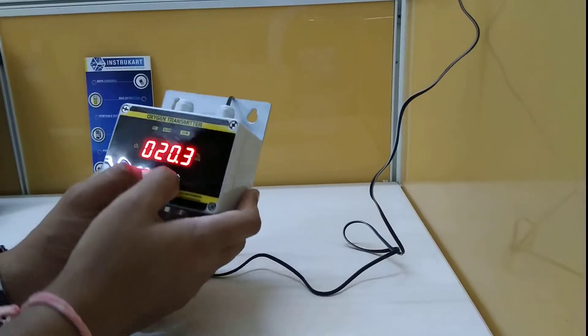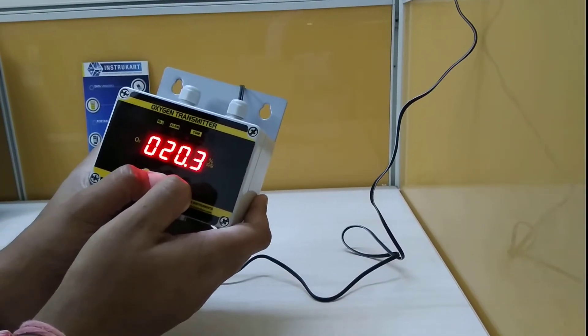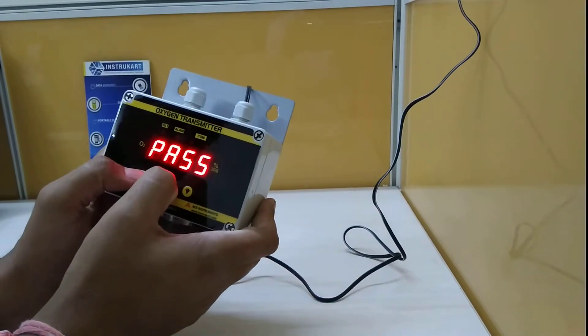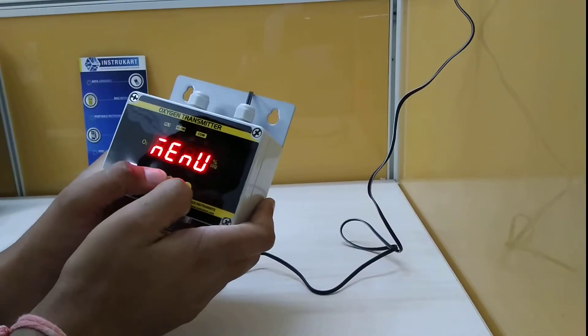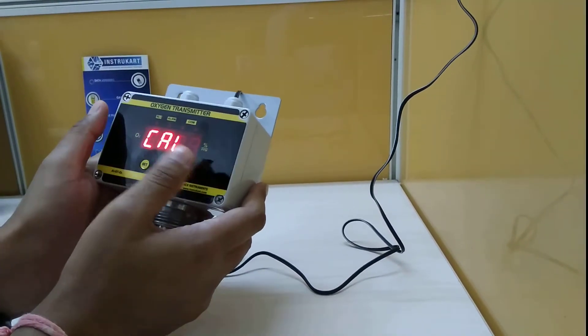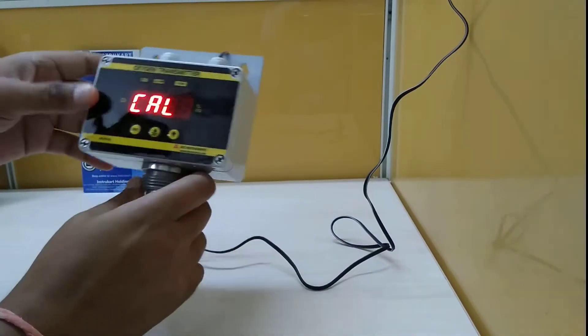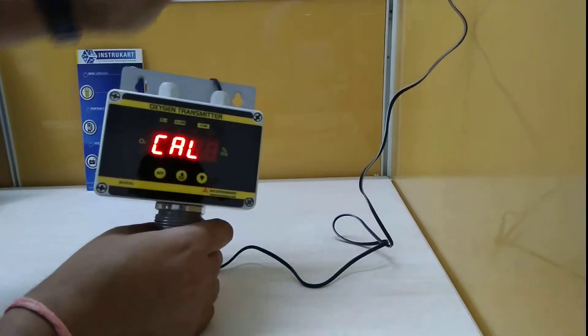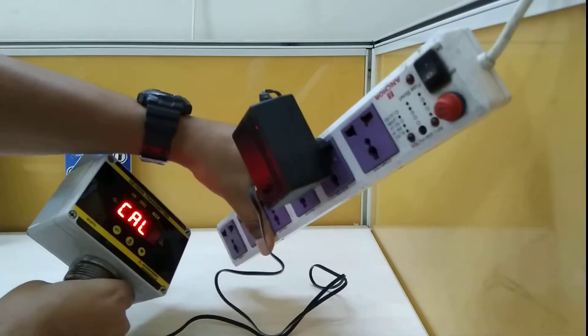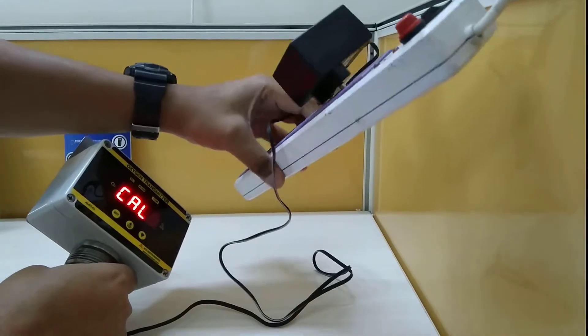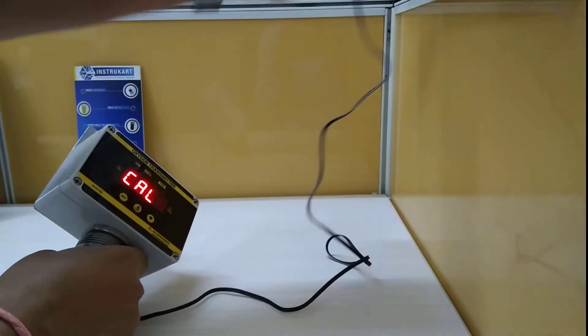To use the menu function, press and hold these two keys, enter the correct password, and then you can access the menu to set low and high setpoints. The oxygen transmitter runs on an adapter which is 24 volts DC and plugs into any 230-volt supply.